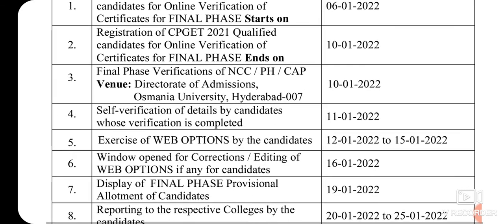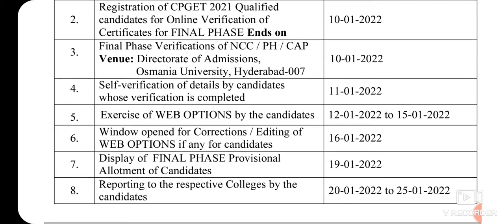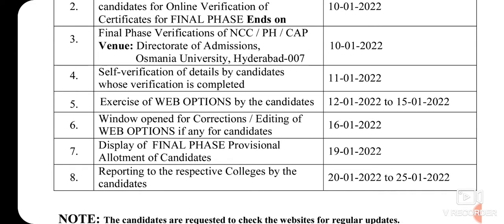Registration of CPK 2021 qualified candidates for online verification of certificates for final phase ends — print out and online certificate verification January 10th kate end avutundi. 6th nundi started, January 10th ki certificate verifications and registrations end avutayi. Final phase ki sambandhiamchi, next final phase verifications anni untayi.